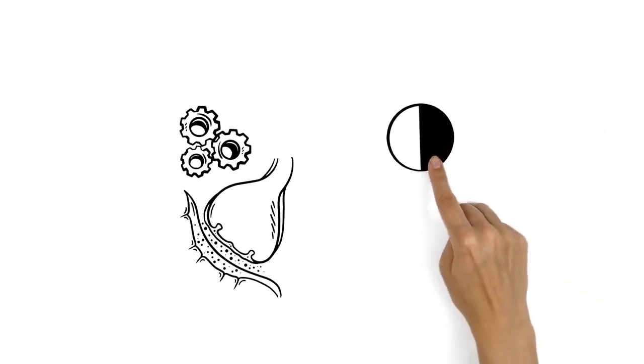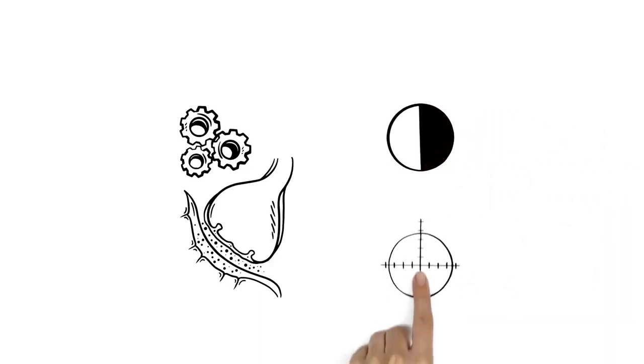Other cells down the line process these signals further. Some of those cells heighten light-dark contrasts. Others are in charge of sharpening the image.